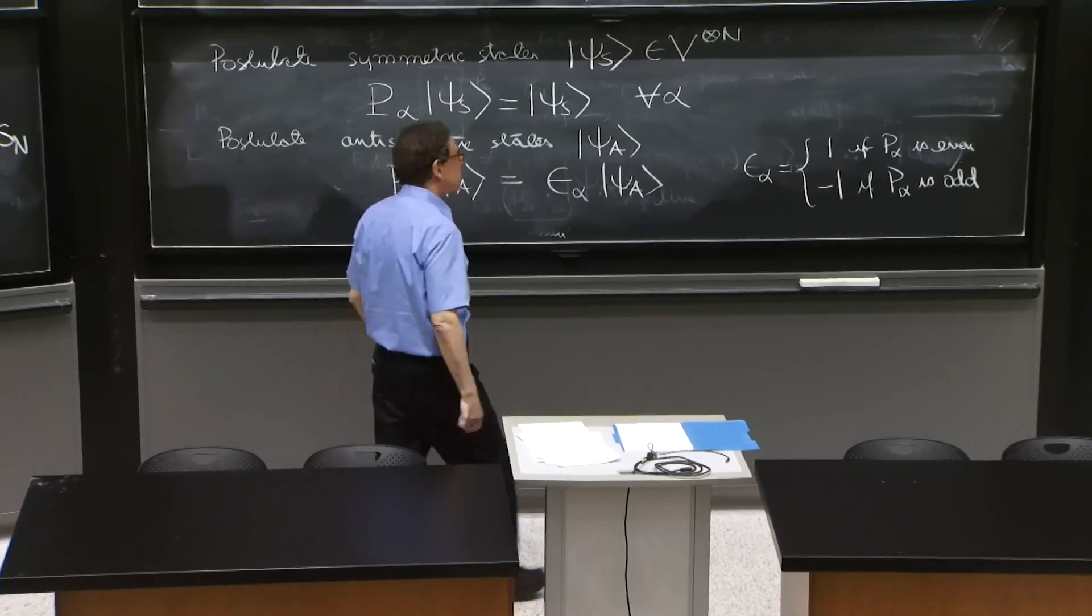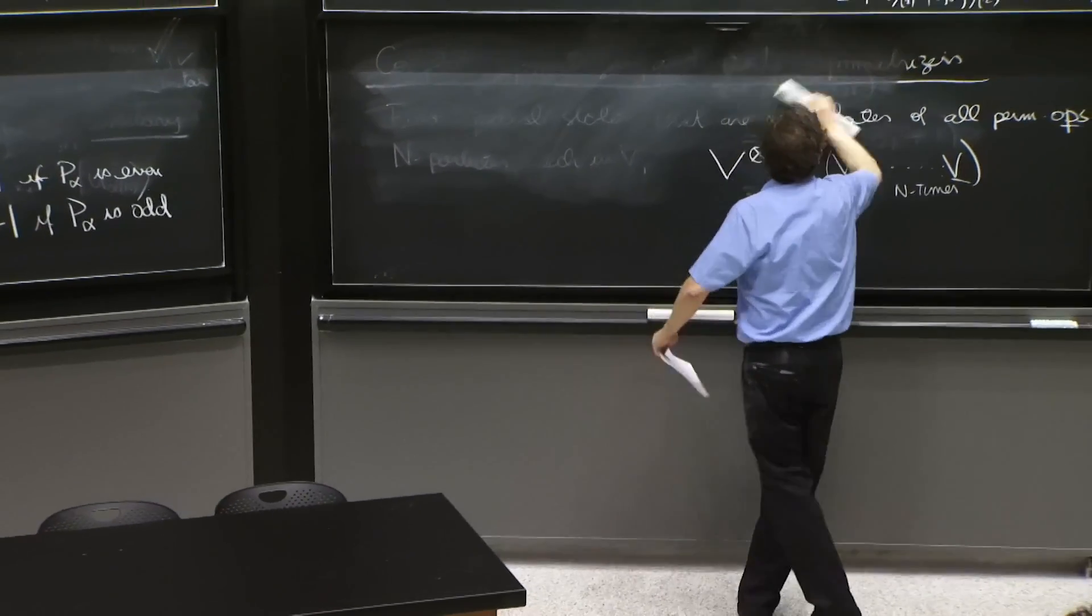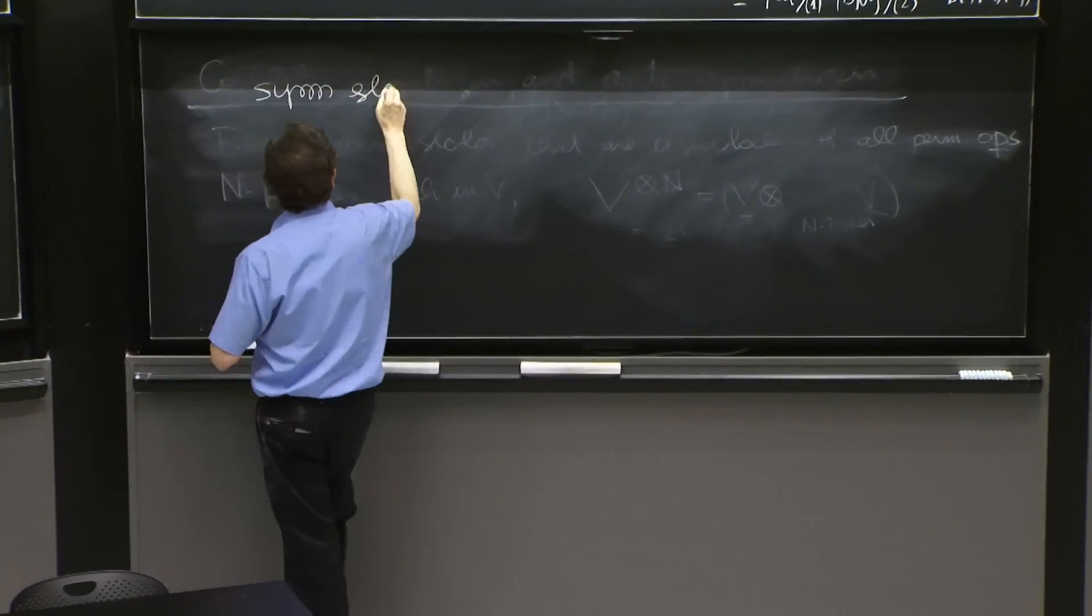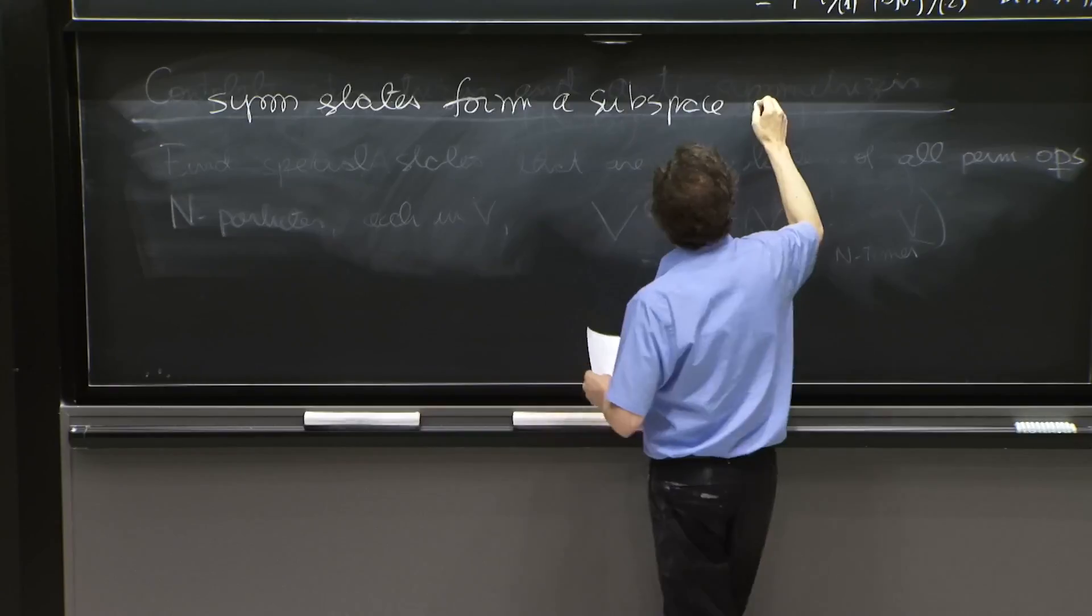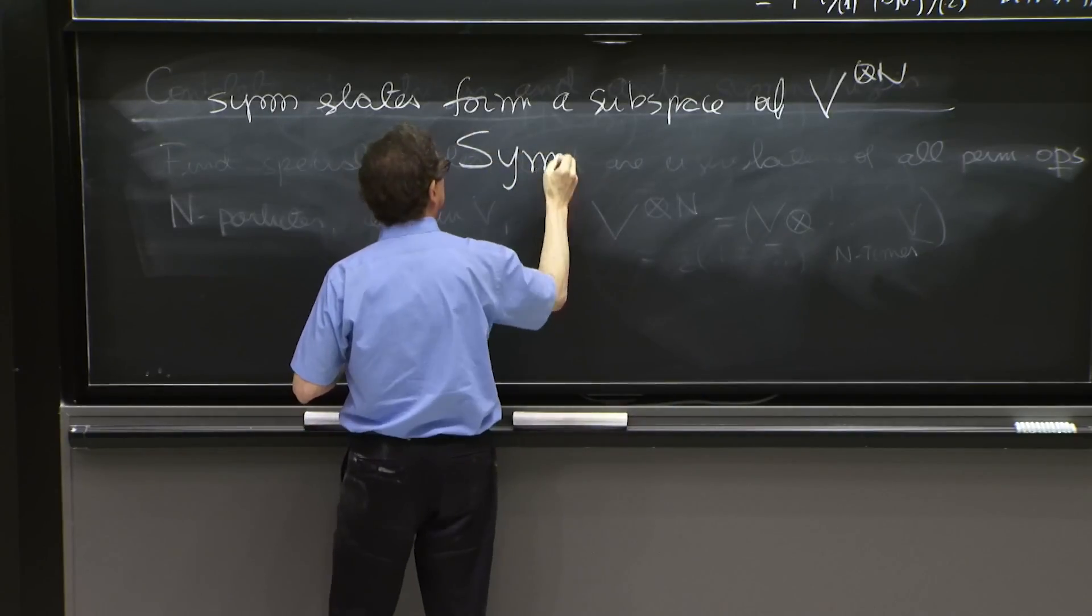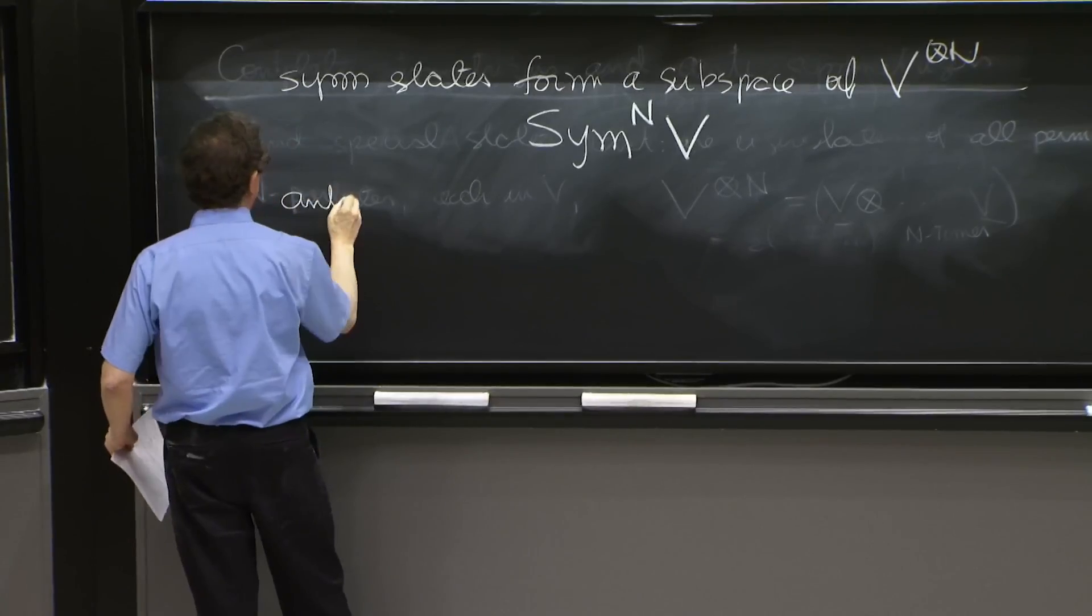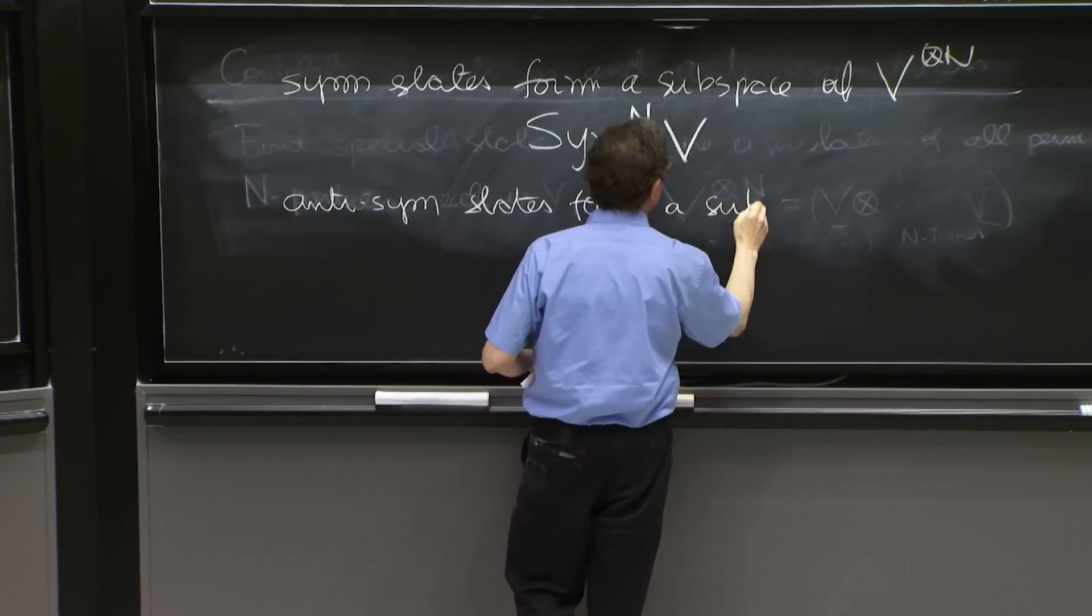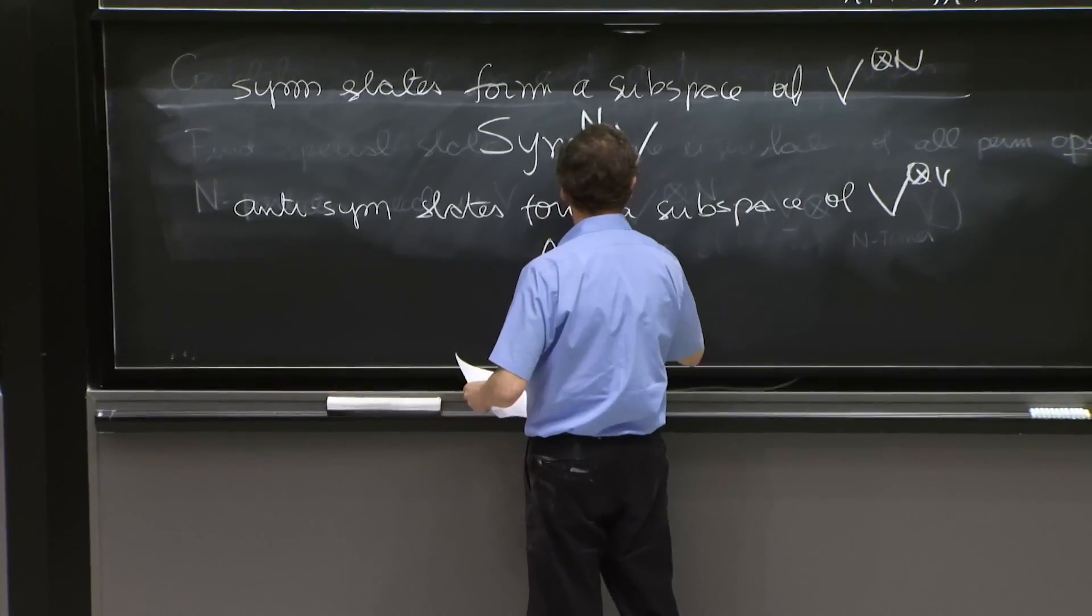So here are the names. And we'll stop and build them next time. So the symmetric states form a subspace of V^n called Sym^n V.